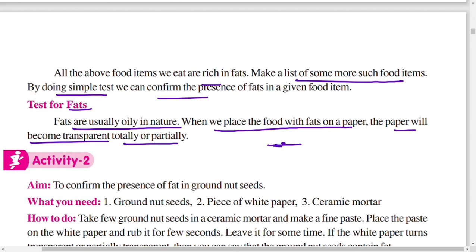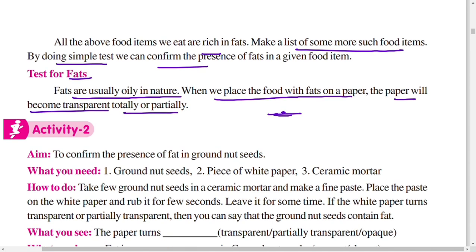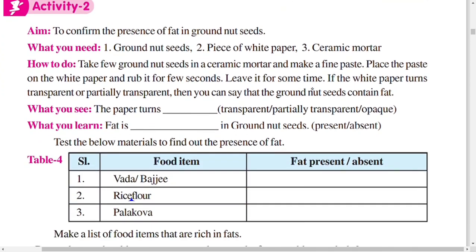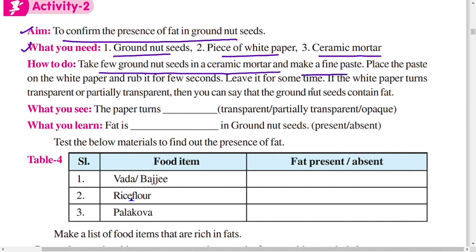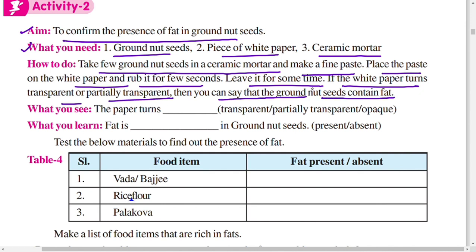Activity 2 — Aim: to confirm the presence of fat in groundnut seeds. You need groundnut seeds, a piece of white paper, and a ceramic mortar. Take a few groundnut seeds in the mortar and make a fine paste. Place the paste on the white paper, rub it for a few seconds, and leave it for some time. If the paper turns transparent or partially transparent, the groundnut seeds contain fat.